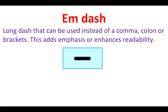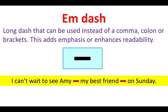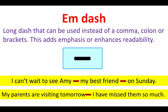M dash. An m dash is a long dash that can be used instead of a comma, colon, or brackets. This adds emphasis or enhances readability. For example: I can't wait to see Amy—my best friend—on Sunday. My parents are visiting tomorrow—I have missed them so much.